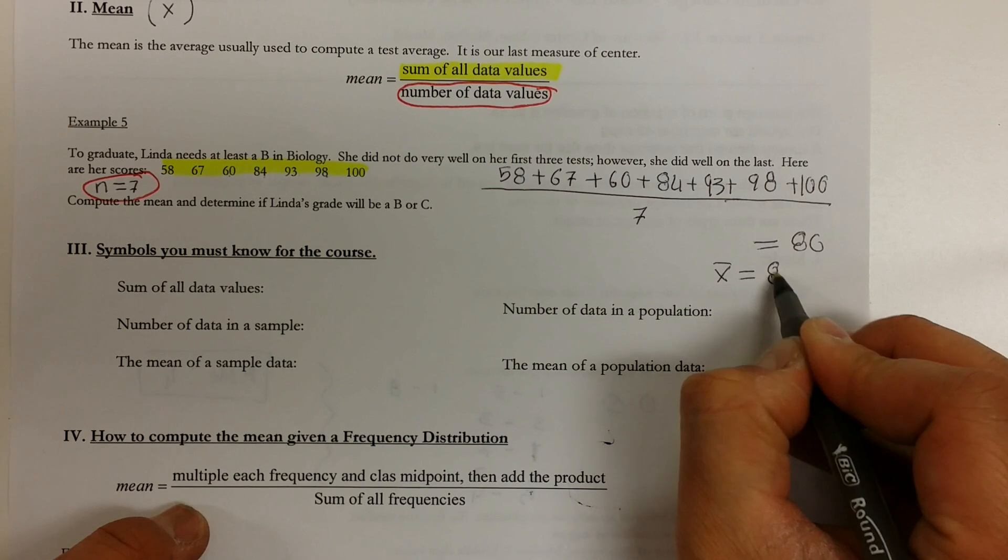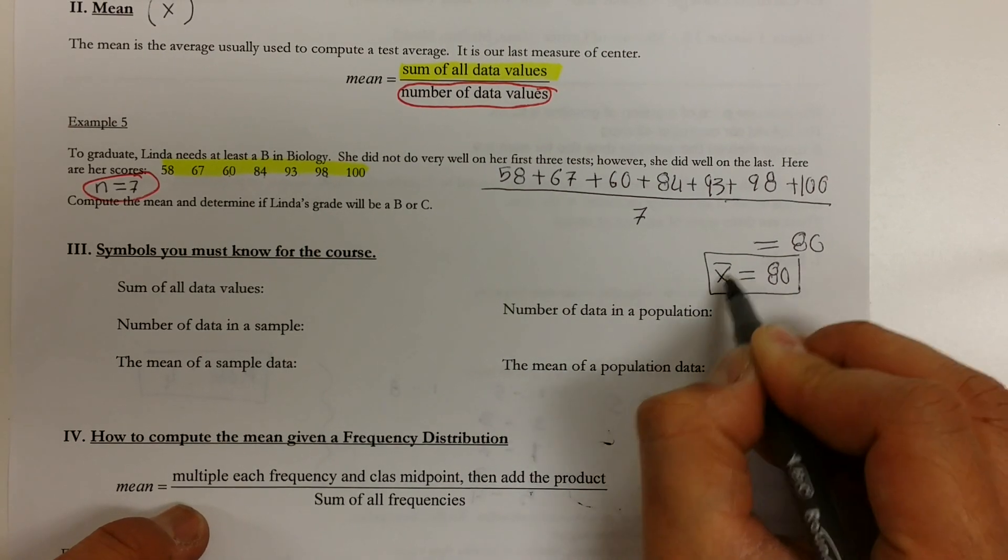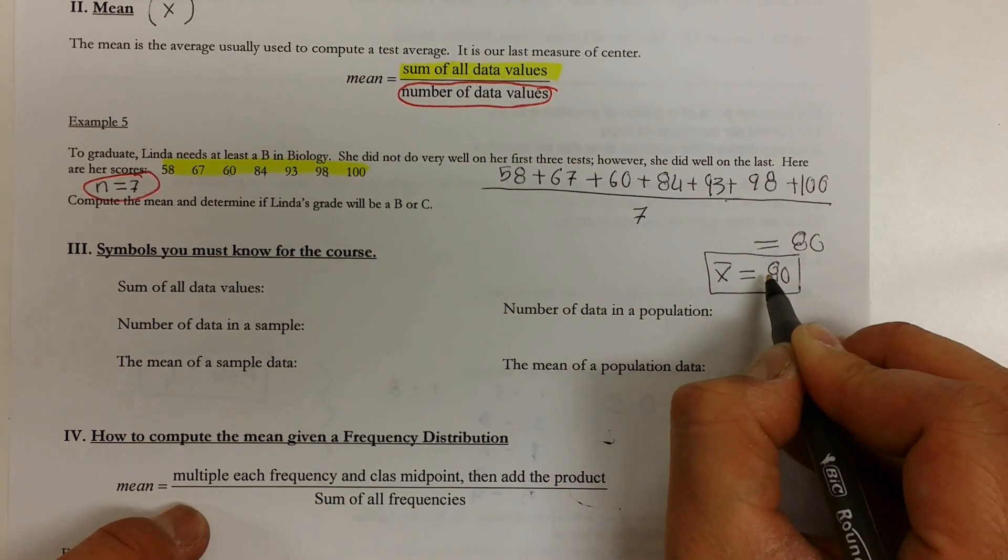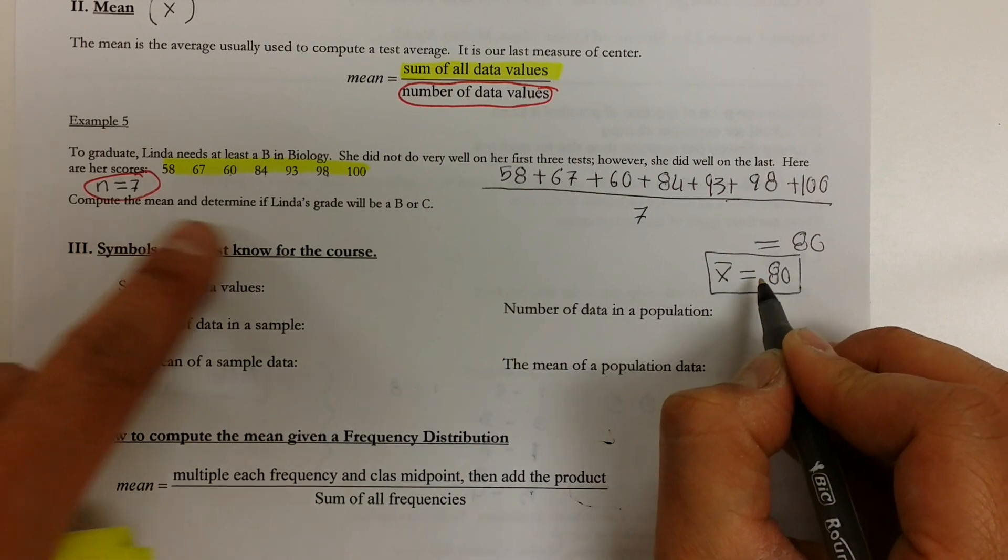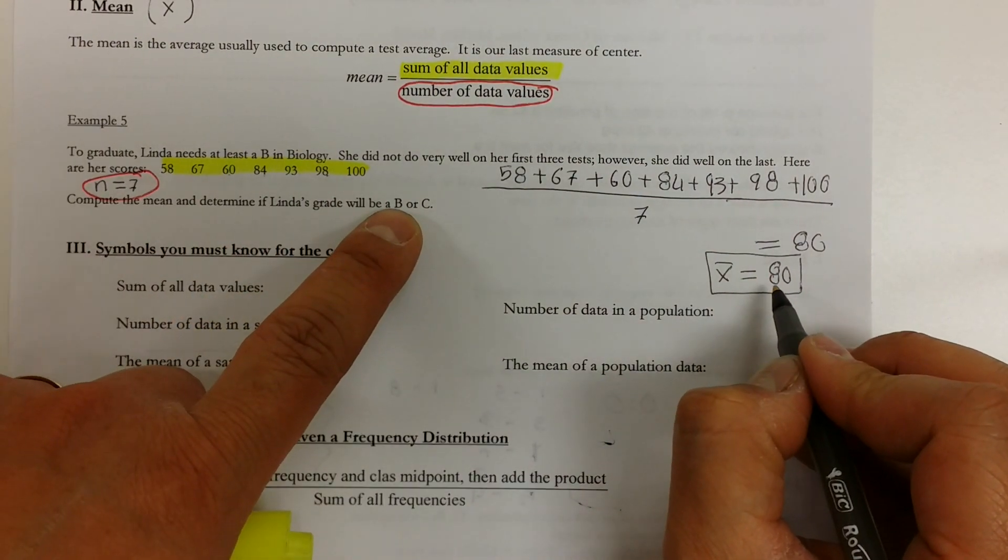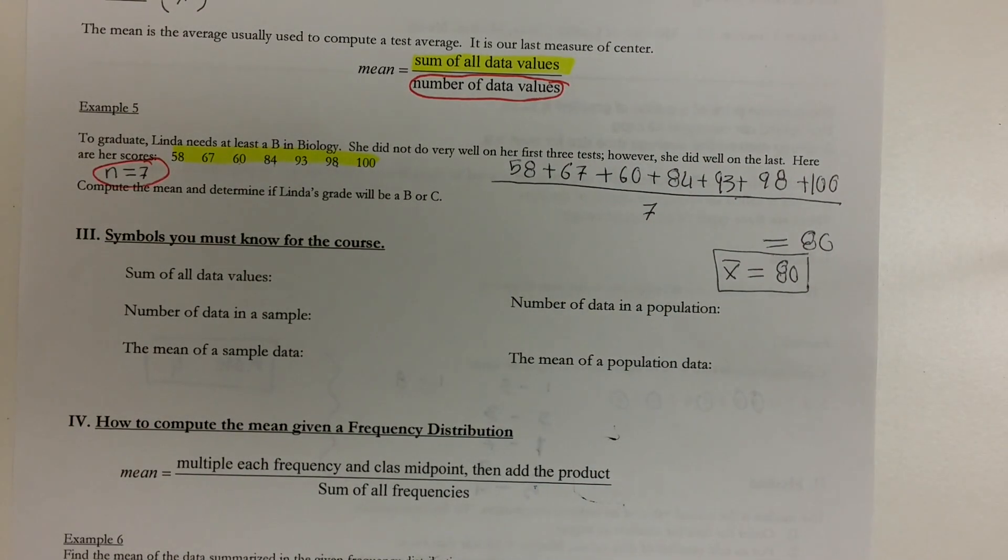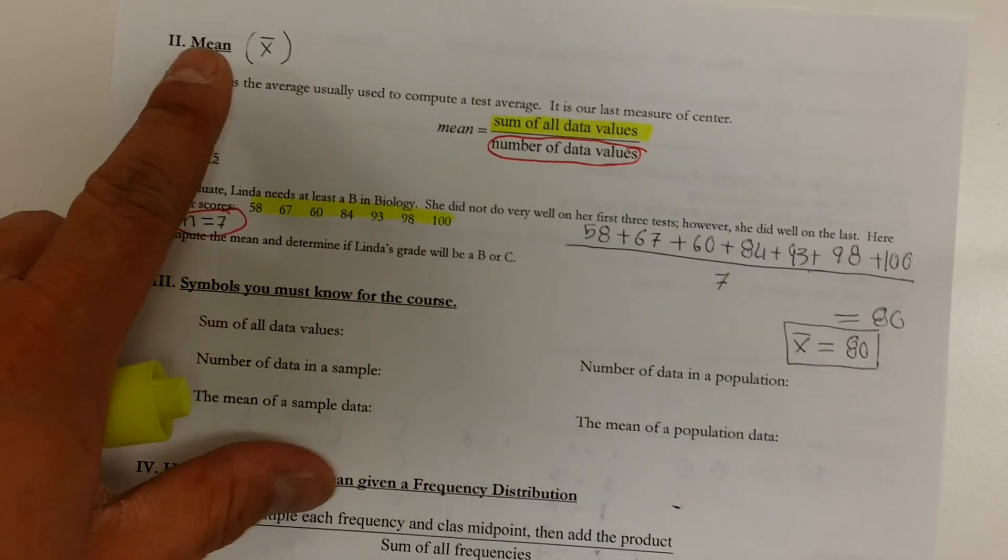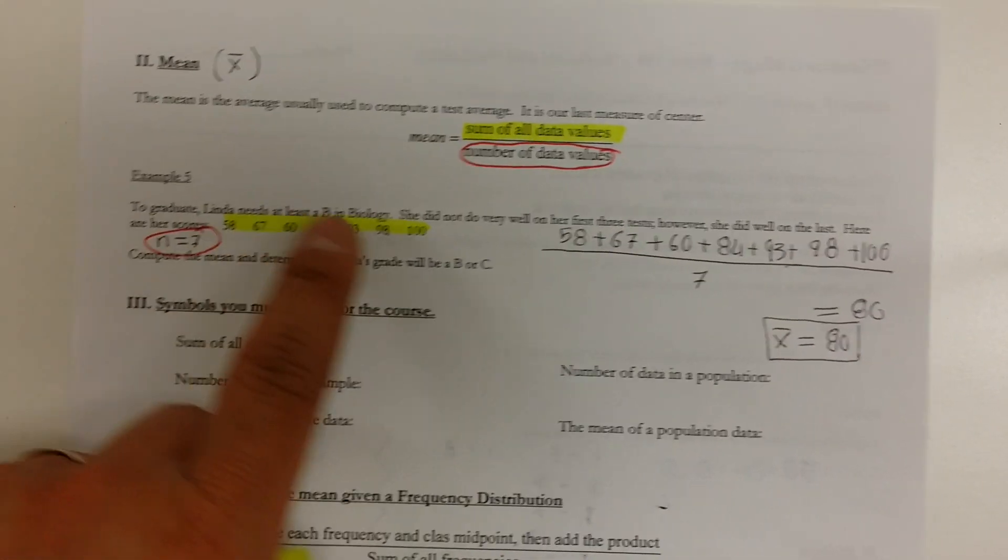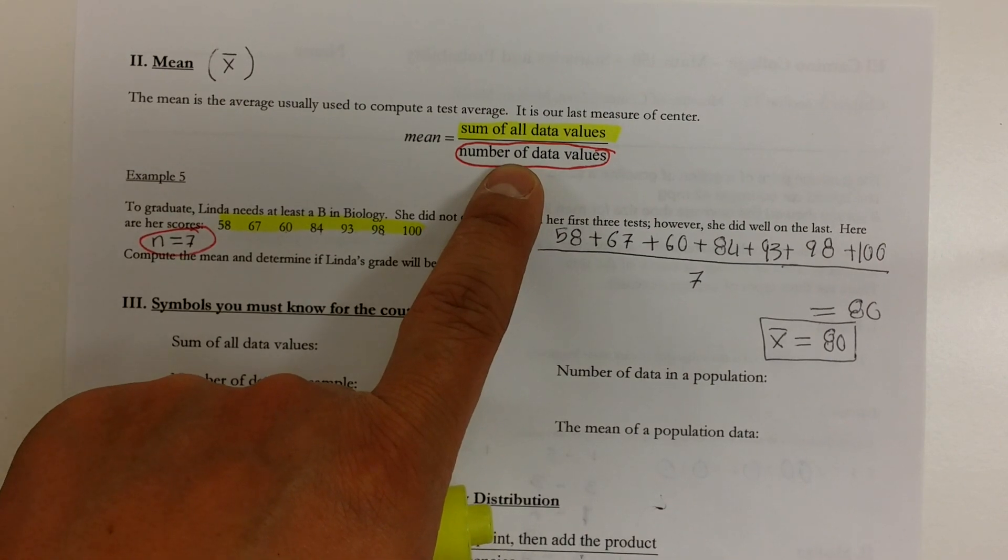We can also say that X bar equals to 80 because remember that X bar is the symbol for the mean. So will she get a B in the class? Yes, she will because her average is 80. That's how you find the mean by adding up all the data and then dividing it by the number of data points.